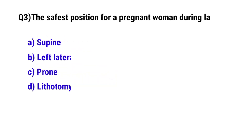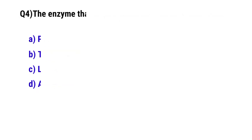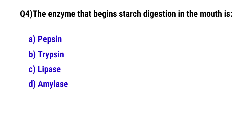Question number 3: The safest position for a pregnant woman during labor is? The correct option is B: Left lateral. Question number 4: The enzyme that begins starch digestion in the mouth is? The correct option is D: Amylase.